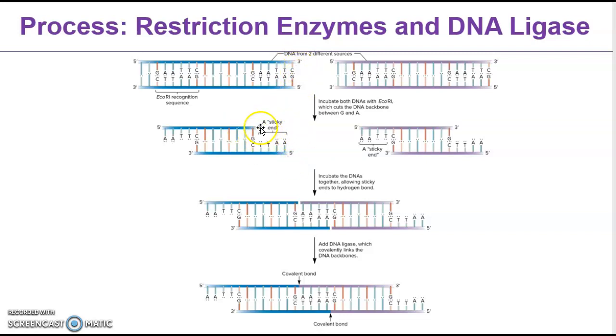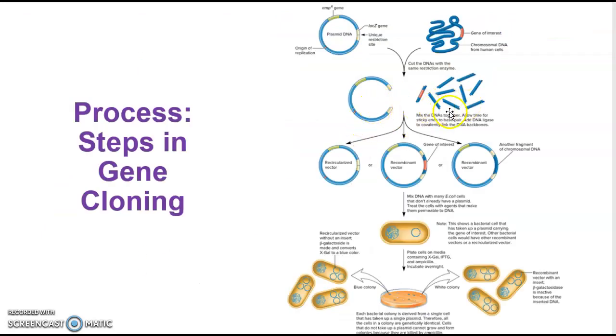They can leave these sticky ends where there's overhangs, and some of them also leave a blunt end. But when they leave a sticky end, then you know it's very specific in what two pieces you can stick together, like a puzzle. You treat the vector DNA as well as the chromosome DNA with this restriction enzyme so that these two puzzle pieces fit together perfectly. Then you use DNA ligase to seal the phosphate sugar backbone.